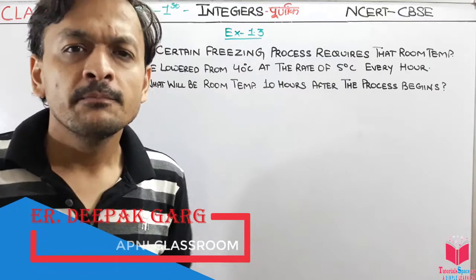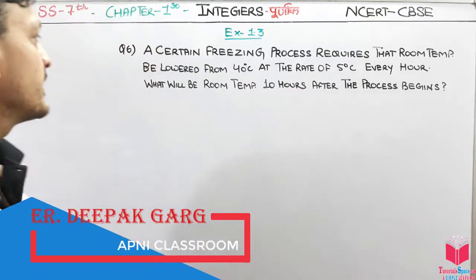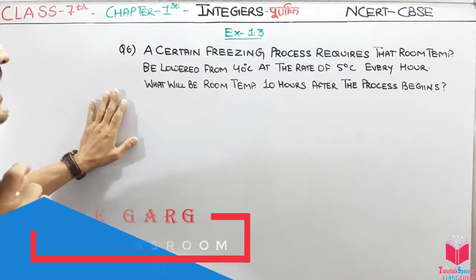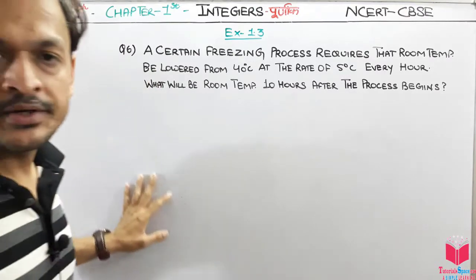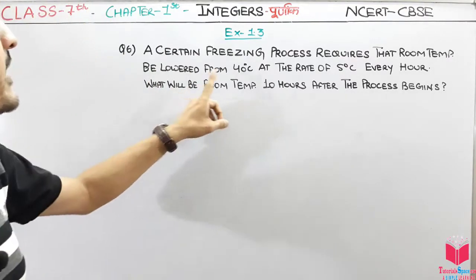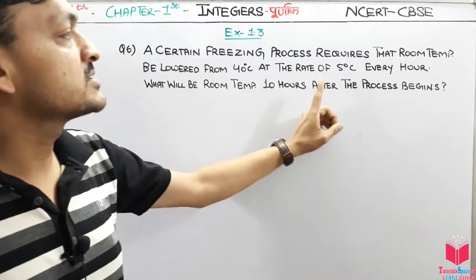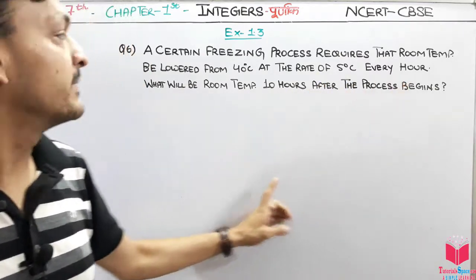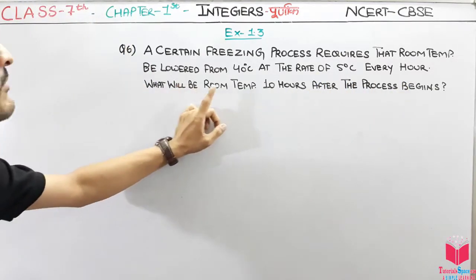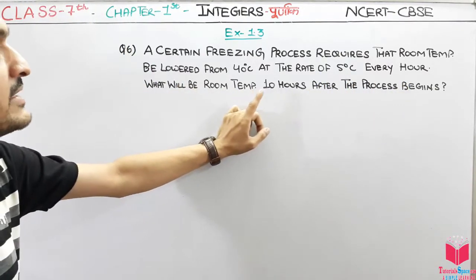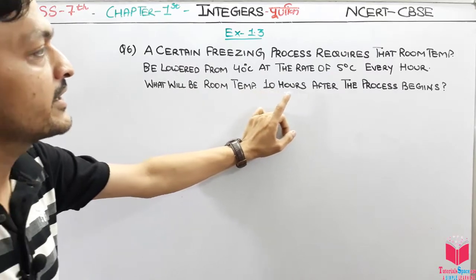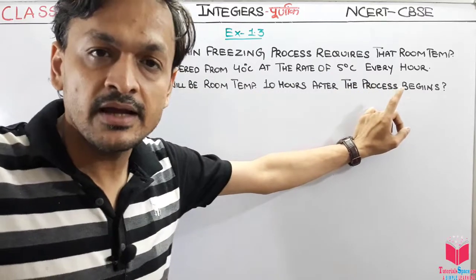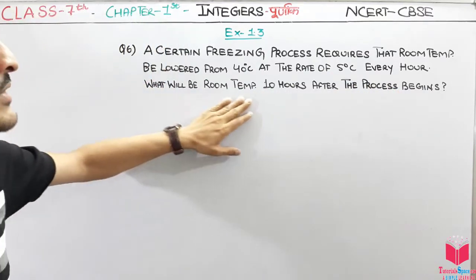Hello bachow, ab hum karenge question number 6 exercise 1.3. Question is: a certain freezing process requires that the room temperature be lowered from 40 degree Celsius at the rate of 5 degree Celsius every hour. Then what will be the room temperature?